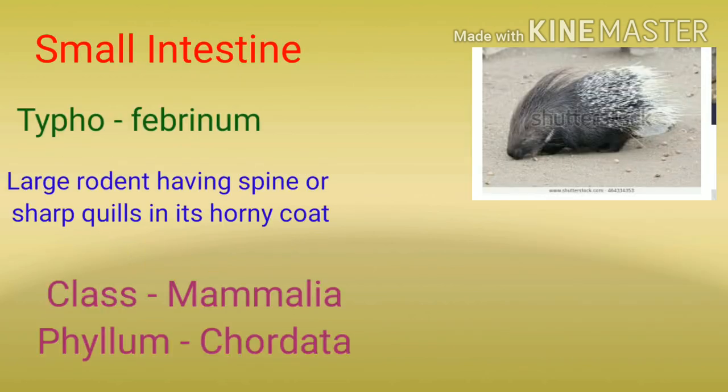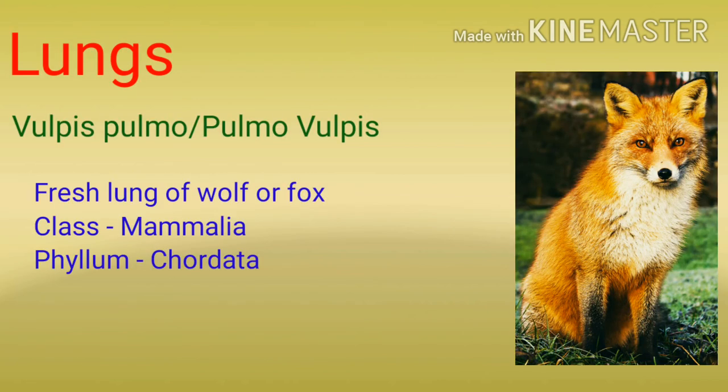Small intestine से बनने वाली medicine है Typhoidinum, जो कि large rodent से बनाई जाती है, class Mammalia और phylum Chordata। Lungs के बारे में, we have medicine Vulpus pulmo और Pulmo vulpis, which is prepared from fresh lung of wolf और fox, class Mammalia और phylum Chordata।